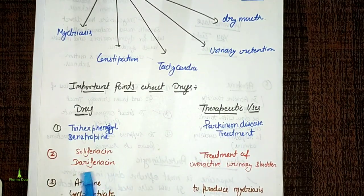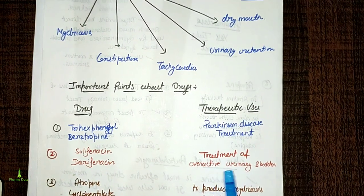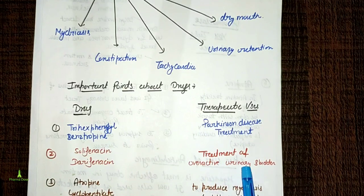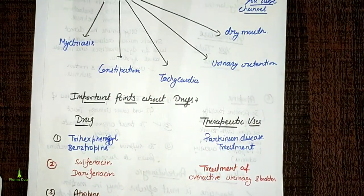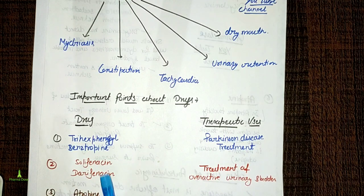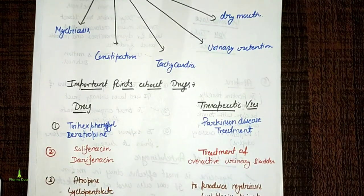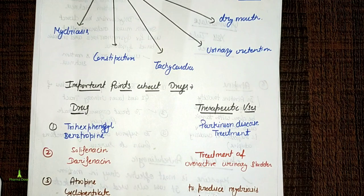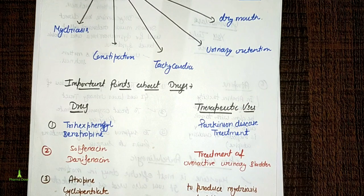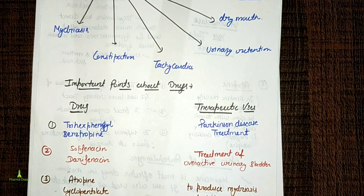Next, tolterodine and darifenacin are used in the treatment of overactive urinary bladder — where the bladder is overactive, causing urinary urgency or urination problems, and we use these drugs. Next, atropine, cyclopentolate, and tropicamide produce mydriasis and cycloplegia and are used prior to ophthalmic examination for fundal reflection.